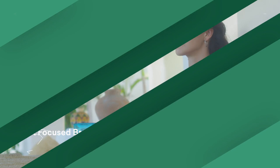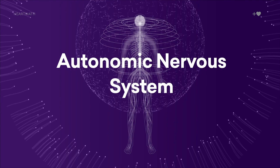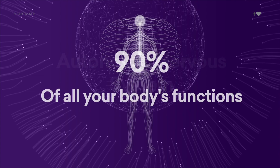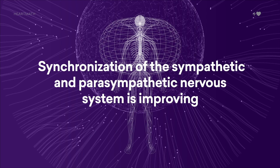Continue with your heart-focused breathing. Let me explain what's happening inside your body. As you breathe this way, it's synchronizing your nervous system — in particular what's called your autonomic nervous system, which influences about 90% of all your body's functions. Synchronization between the two main branches in that system, the sympathetic and parasympathetic nervous system, is improving. It's creating a balancing effect inside your body.